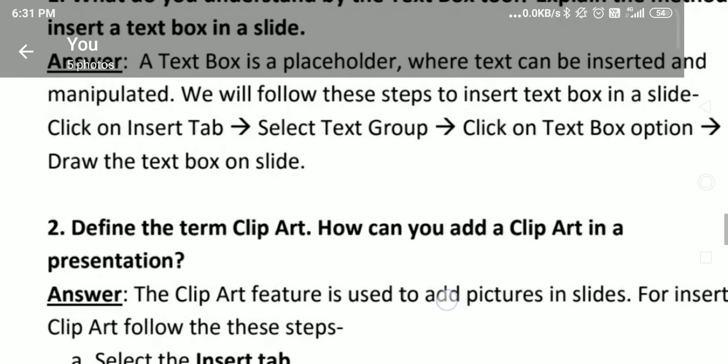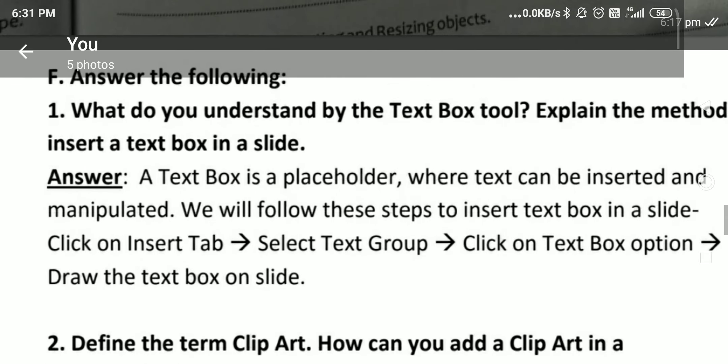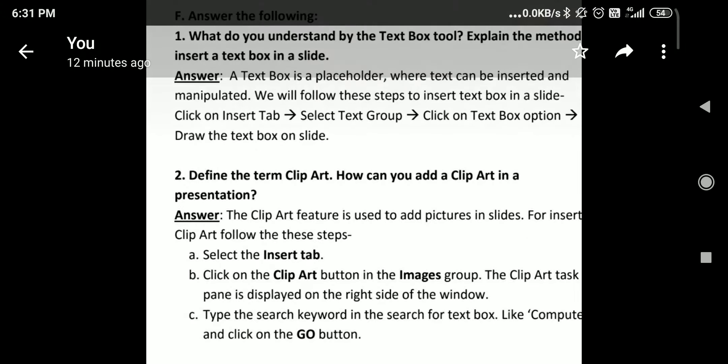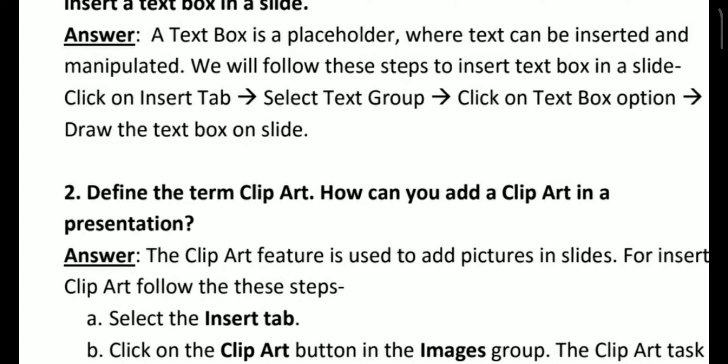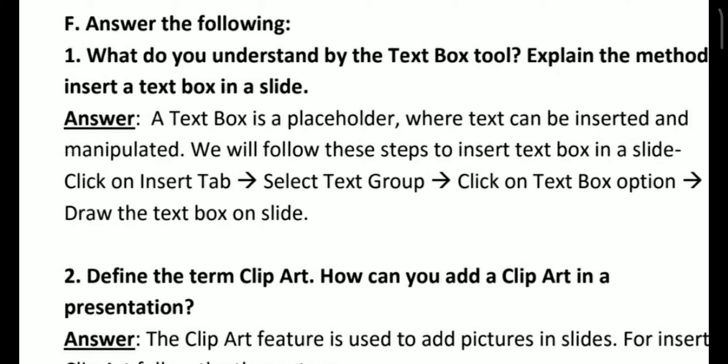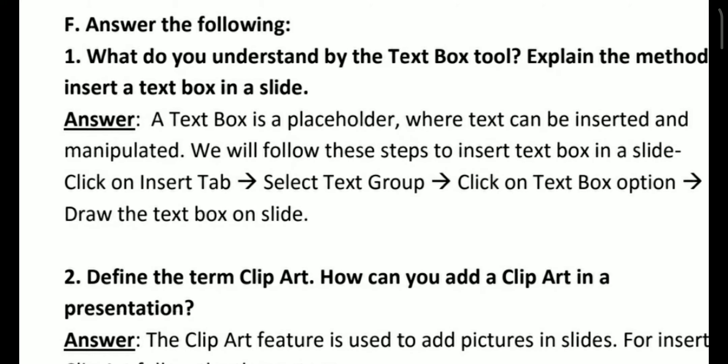Now we will discuss question answer. What do you understand by the text box tool? Explain the method to insert a text box in a slide. Answer. A text box is a place holder where text can be inserted and manipulated. We will follow these steps to insert text box in a slide. Click on the insert tab. Select text group. Click on the text box option. Draw the text box on slide.